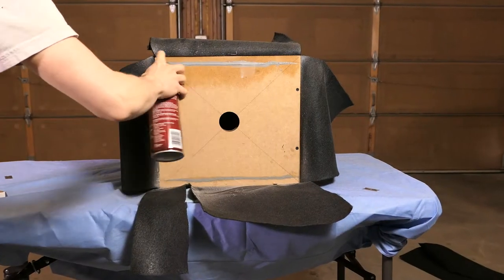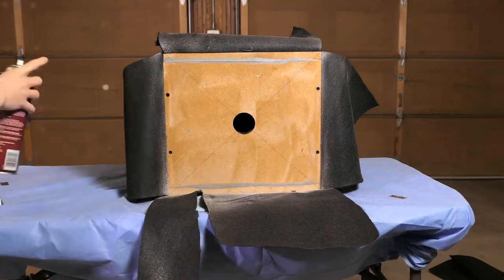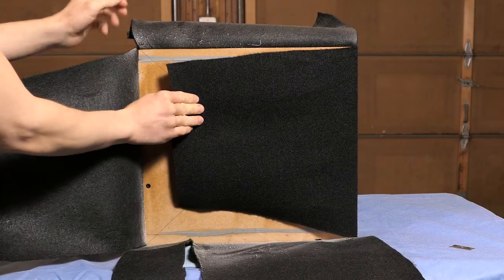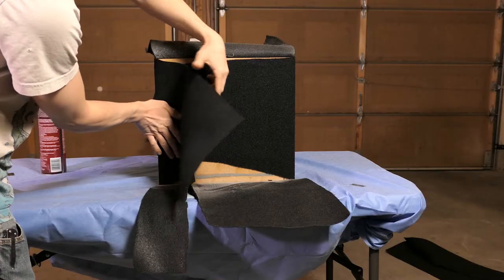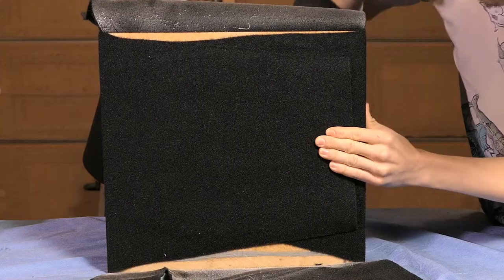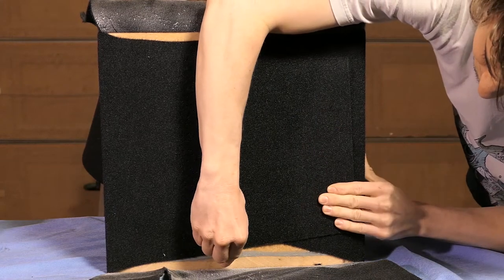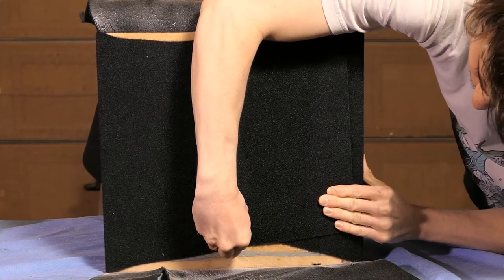Next I'll spray a little bit of adhesive on the box only and fold one of the side flaps tightly over the box and smooth it out. Do the same to the other side and while holding it in place use a new razor blade to firmly cut straight down the center.